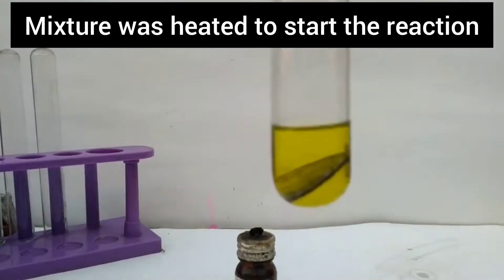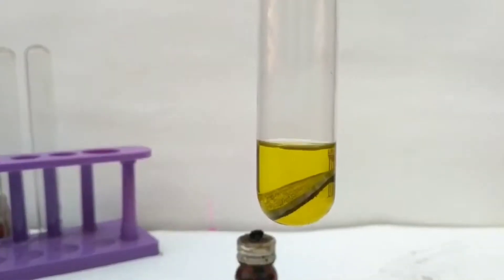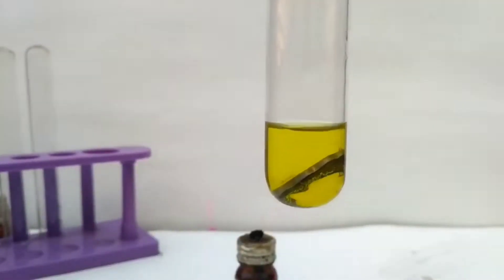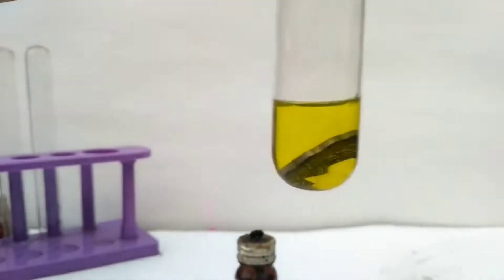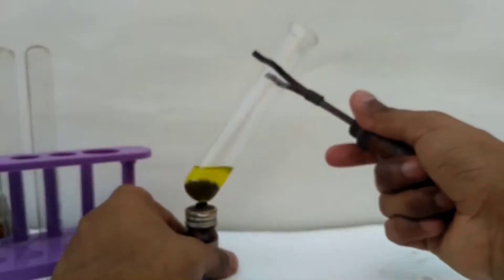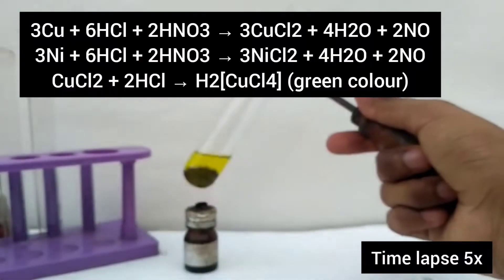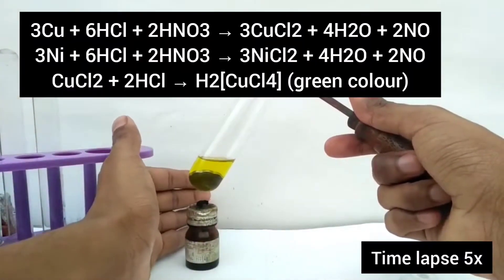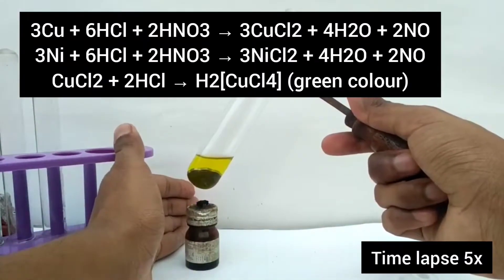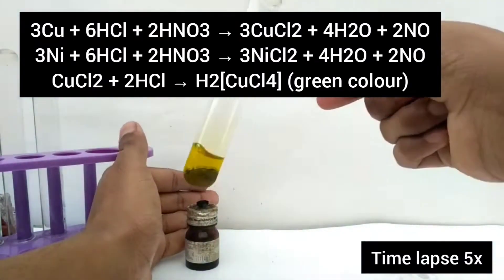For that, I am adding the coins in aqua regia containing excess of hydrochloric acid and I will heat it. The reaction is given on the screen. On heating, the reaction becomes faster.